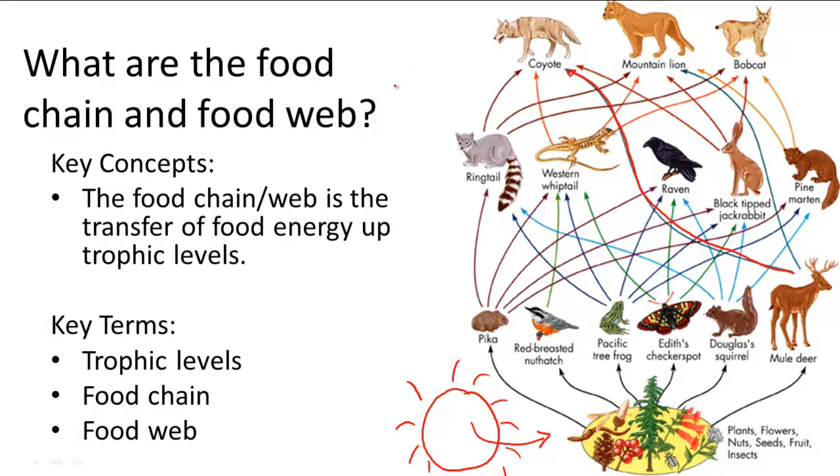The second thing that isn't usually shown but is there are decomposers. The reason decomposers aren't shown is because there would have to be an arrow from every single animal to decomposers. So it would be really messy because they're all going to decomposers. And what decomposers do is break down the dead organic material of animals when they die or when they poop or pee or whatever.